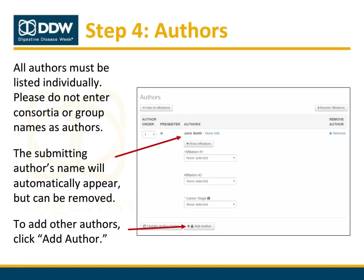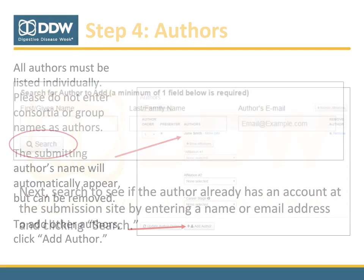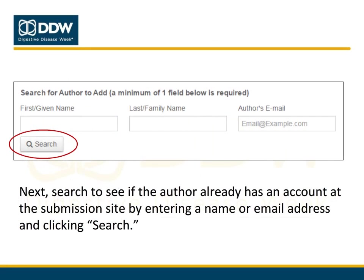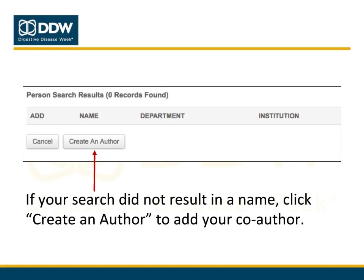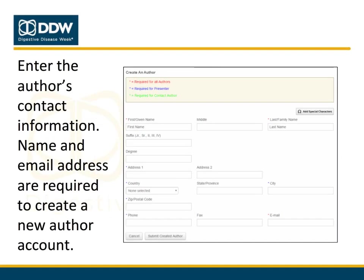To complete Step 4, enter your abstract co-authors and their affiliations. The submitting author's name and affiliation will automatically populate but can be removed. To add additional authors, click the Add Author button. Search by name or email address to see if the author already has an account. If found, click the Add link to add them as a co-author. If not found, click Create an Author to add their information manually. Full name and email address are required.